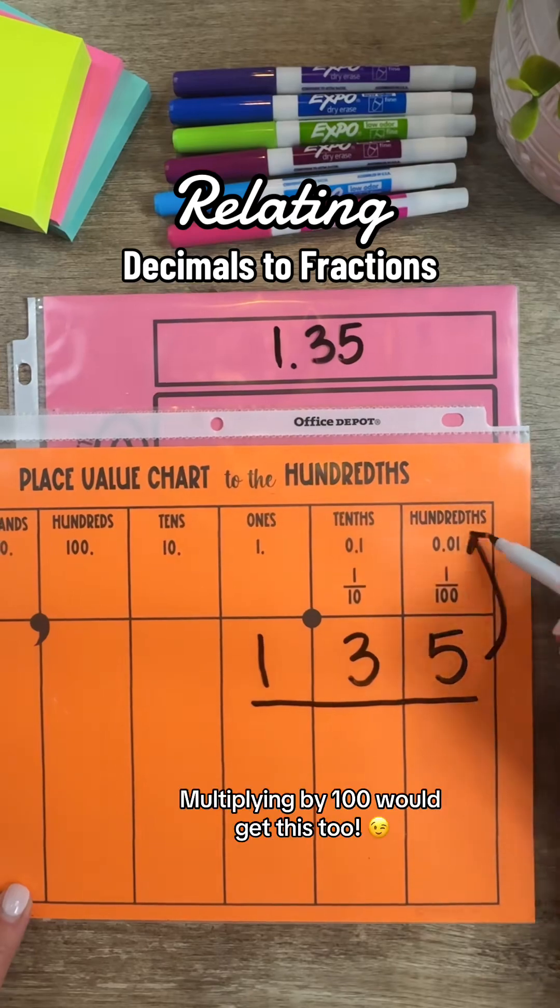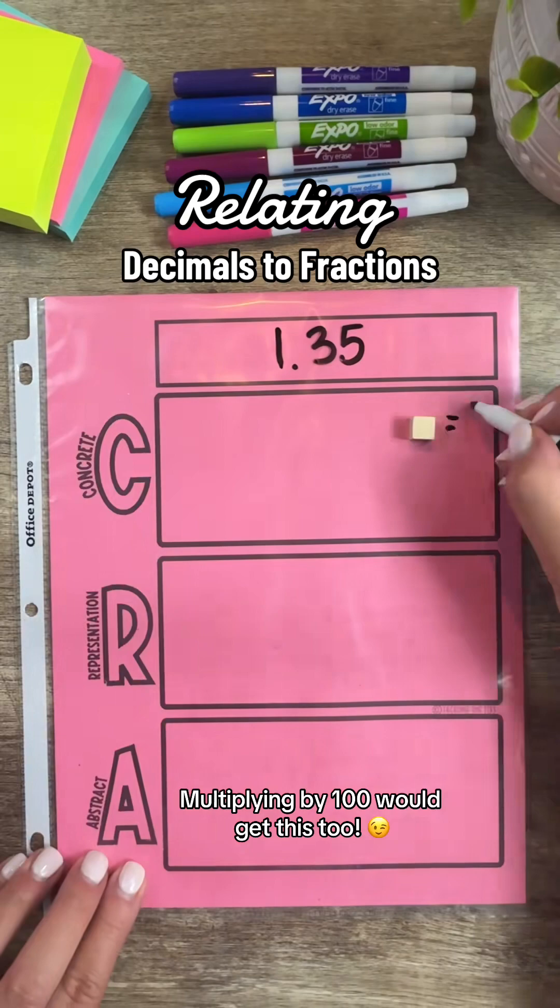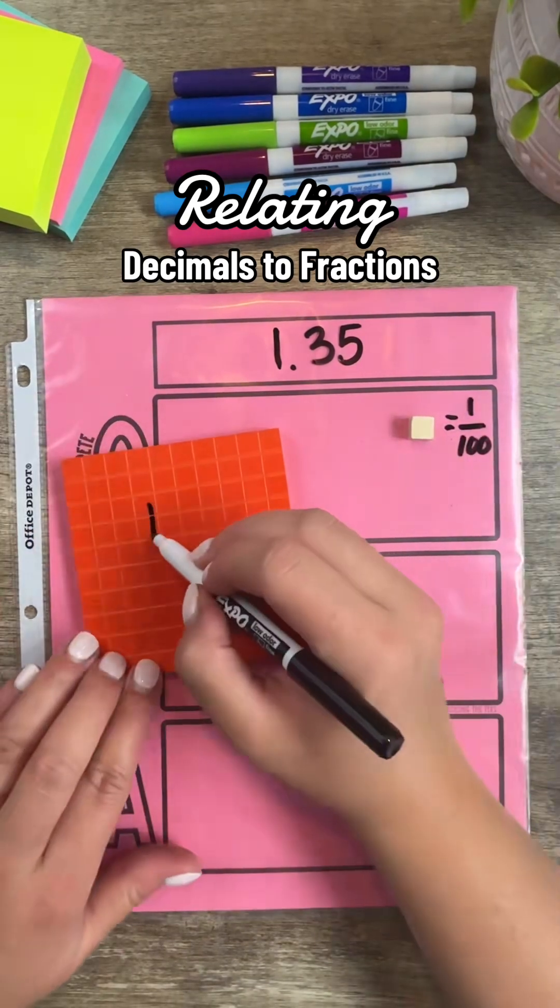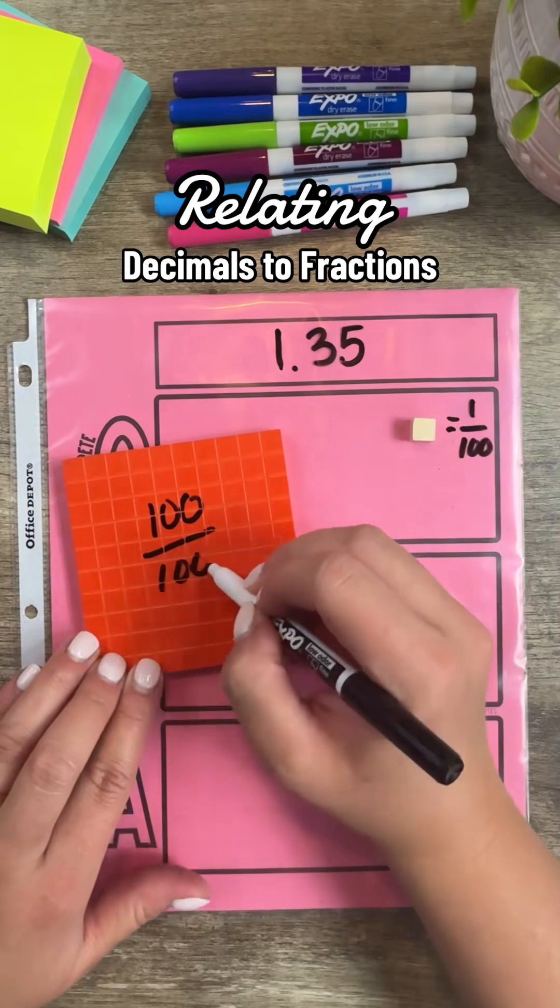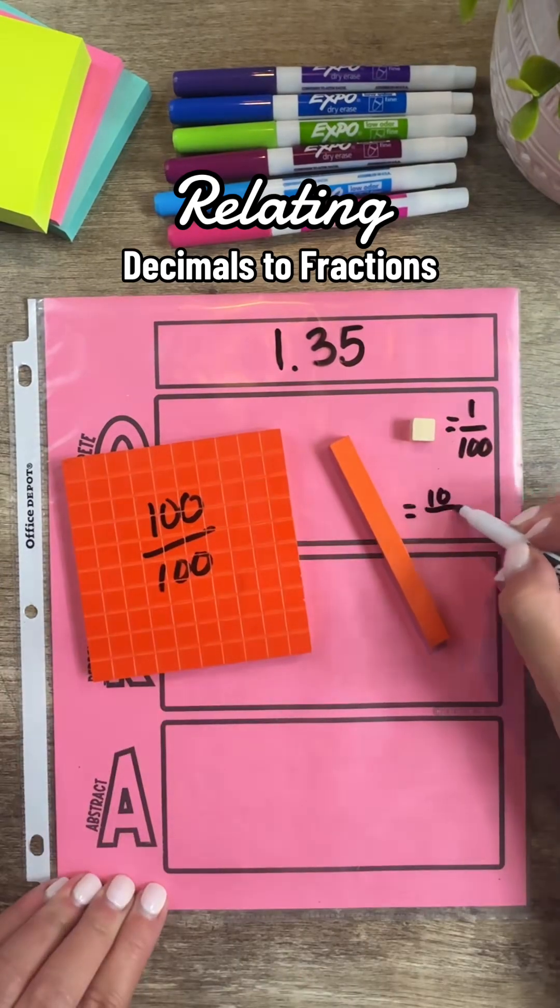This helps me see that there are 135 hundredths in this number. So if this represents 1 one hundredth, then I know that this can represent 100 one hundredths, and this stick can represent 10 hundredths.